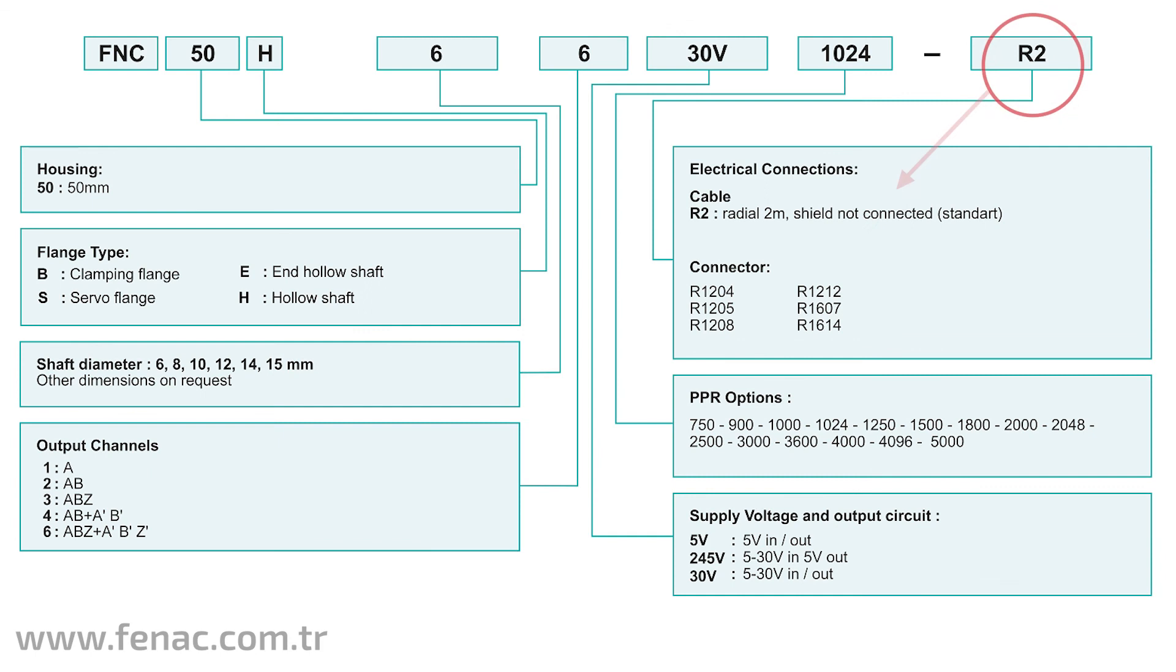Electrical connection: Depending on the area of application, the connection cables or connectors of Fennec encoders can be radial side or on the back surface. The cable length should be selected according to the distance between the reader and the encoder in the application area.